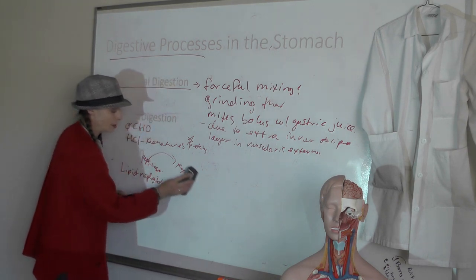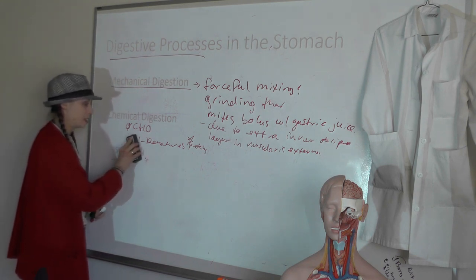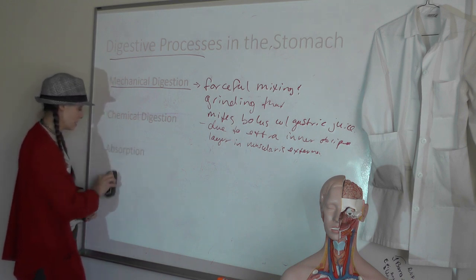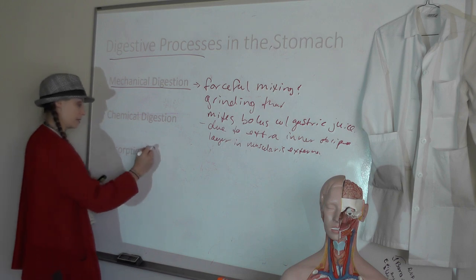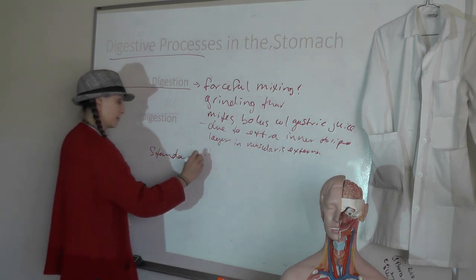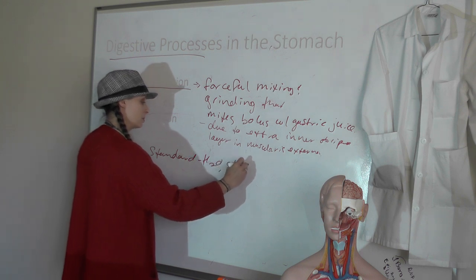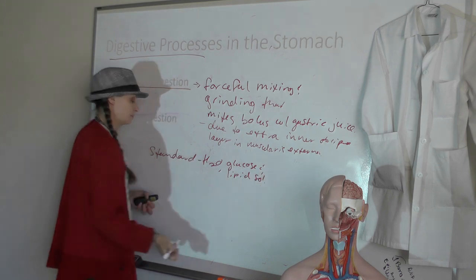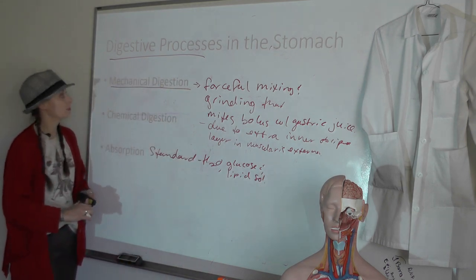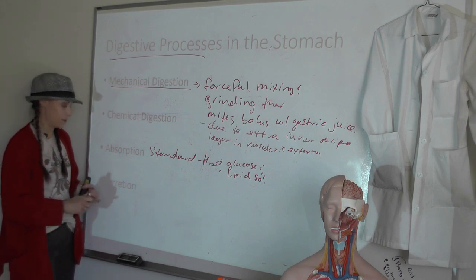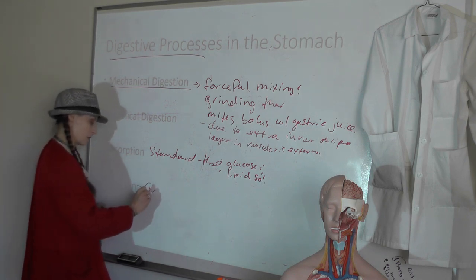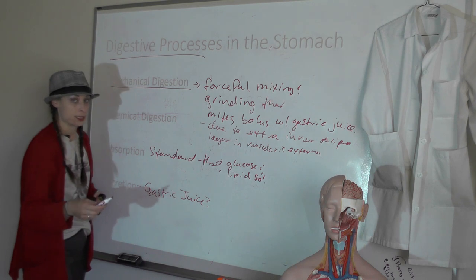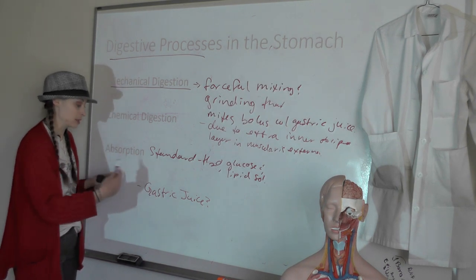Absorption in the stomach is standard — nothing super exciting. We're absorbing water, glucose, and lipid-soluble substances according to cell needs. For secretion, the stomach produces gastric juice containing hydrochloric acid, pepsin, and gastric lipase — that's really what the stomach is adding.